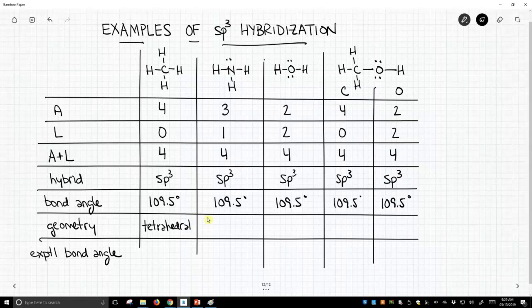For ammonia, we have hybridization sp3 and A equals three. So this is trigonal pyramidal. For water, it's sp3 with two attached atoms. This is bent.